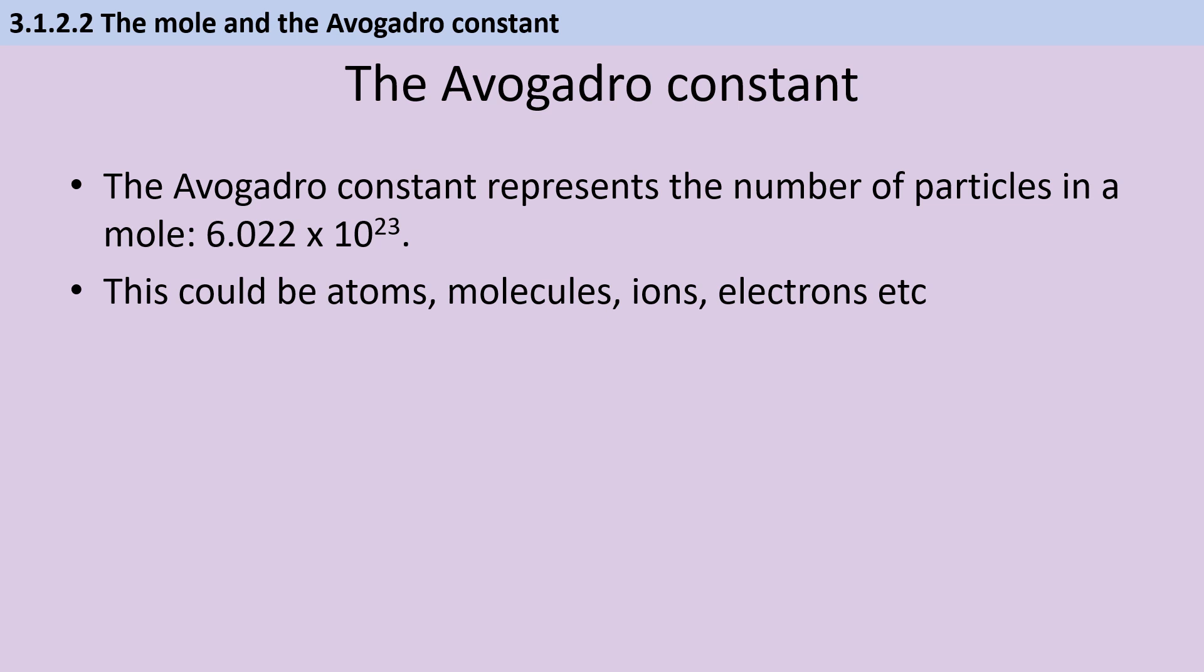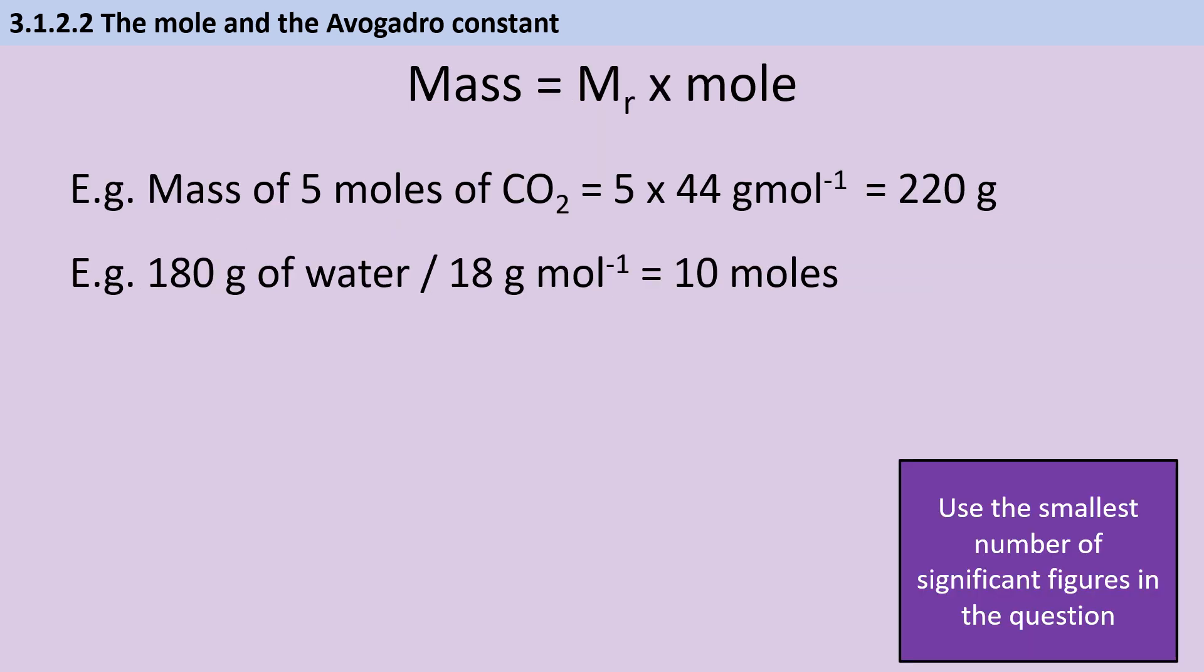The Avogadro constant represents the number of particles in a mole, and that could be the number of atoms, molecules, ions, or even electrons. You can think of a mole like a million. You can have a million people, but you can also have a million families. It doesn't matter what you're looking at, it's just a number that you can apply to any particle. You should be confident using the Avogadro constant to calculate the number of particles in a substance or to work backwards from the relative mass in order to work out the actual mass of one atom or ion or molecule. You should still be able from GCSE to use the relative formula mass together with the number of moles to calculate a mass, or equally to use the mass together with the relative formula mass to calculate the number of moles.